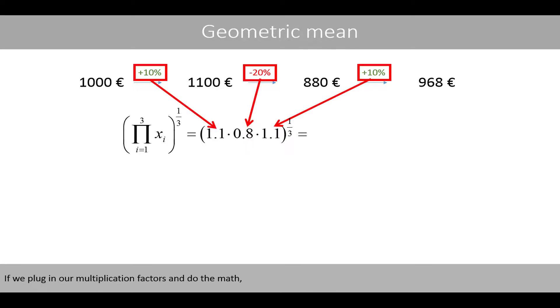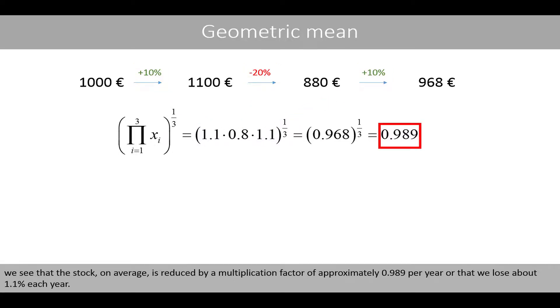If we plug in our multiplication factors and do the math, we see that the stock, on average, is reduced by a multiplication factor of approximately 0.989 per year or that we lose about 1.1% each year.